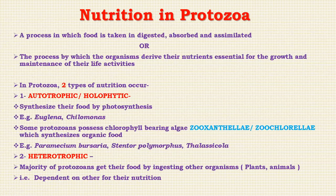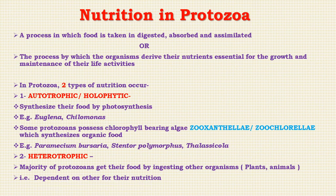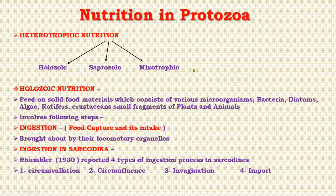Now, coming to heterotrophic nutrition. Some protozoans are dependent on others for their nutrition and get their nourishment by ingesting other organisms, both plants and animals. Such type of nutrition is known as heterotrophic. Heterotrophic nutrition includes three types: first is holozoic, also known as zootrophic; second is saprozoic; and third is myxotrophic.